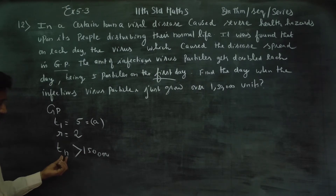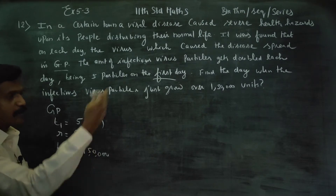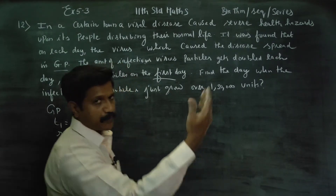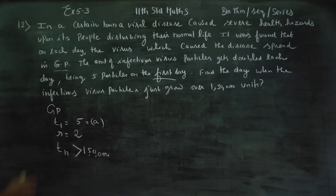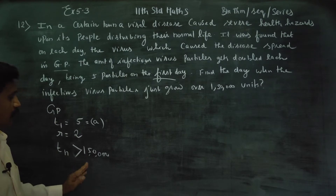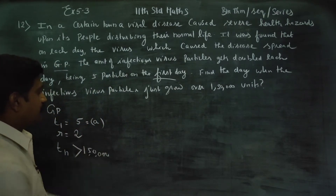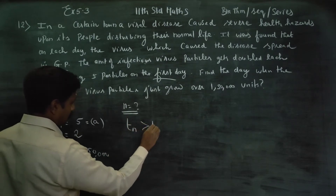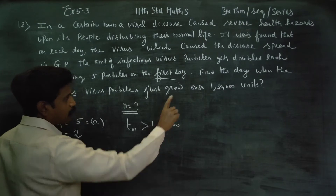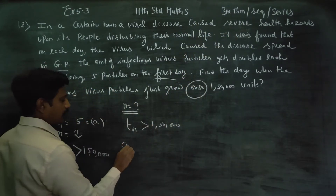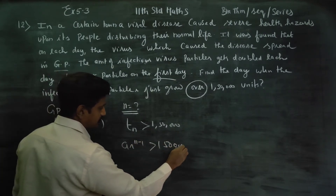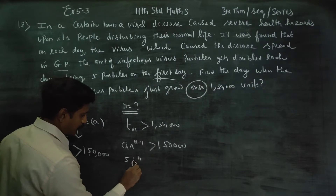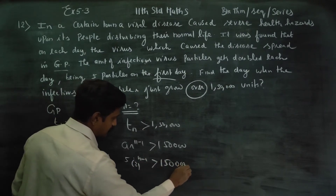So: day 1 is 5, day 2 is 10, day 3 is 40,000 — and we want to find the value of n. Tn must be greater than 1,50,000. 'Over' means more than. Tn is given by the formula ar^(n-1), so: 5 × 2^(n-1) is greater than 1,50,000.